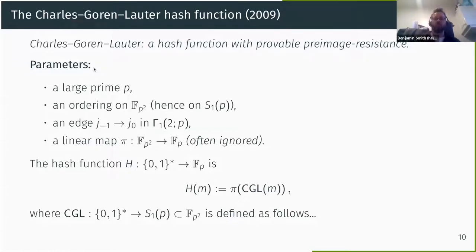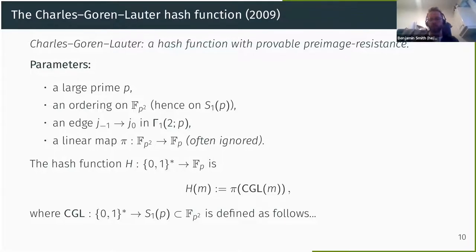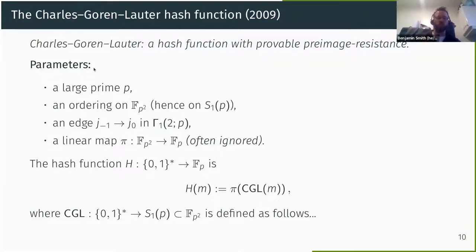What's interesting about Charles-Goren-Lauter? It's a hash function with provable pre-image resistance. This doesn't mean it's an absolute mathematical theorem, but rather there's a rigorous proof that reduces the problem of computing pre-images to an actual interesting number-theoretic problem — specifically, the isogeny problem.